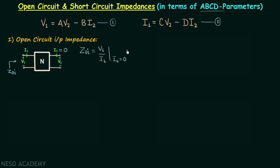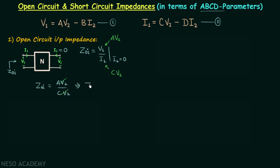Now when we put I2 equal to 0 in equation number 1, we will have V1 equal to A·V2. So in place of V1 we can write A·V2. And when we put I2 equal to 0 in equation number 2, we will have I1 equal to C·V2. So in place of I1 we can write C·V2. Therefore we can write the impedance Z sub OI equal to A·V2 divided by C·V2. V2 cancels from numerator and denominator, and therefore the open circuit input impedance is equal to parameter A divided by parameter C.